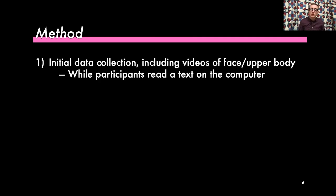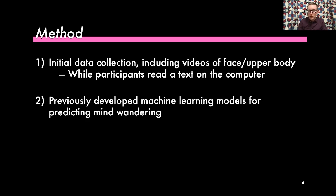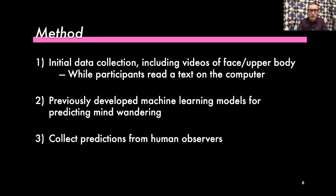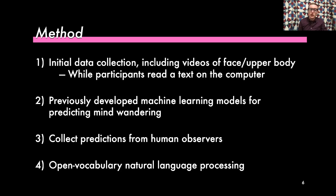For this project, we first did a data collection with users reading an electronic textbook and recorded videos of their face and upper body. We then applied previously developed machine learning models to predict mind-wandering. Finally, we collected predictions from human observers. To analyze those data, we applied natural language processing to figure out what text from the observer's justifications was related to human or computer predictions of mind-wandering and not mind-wandering.